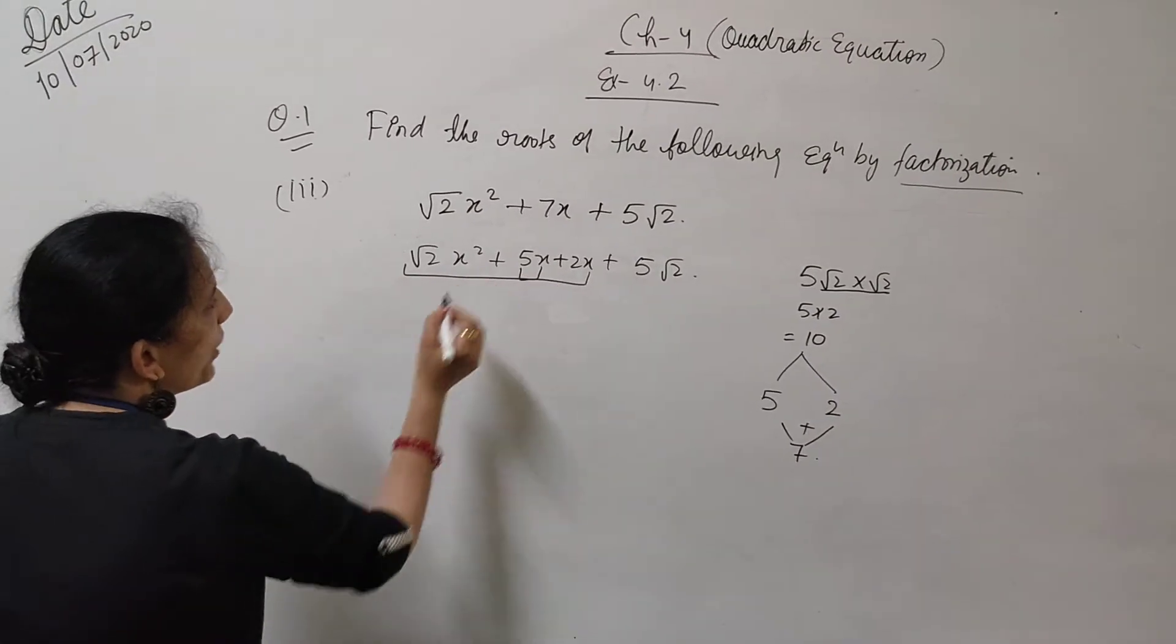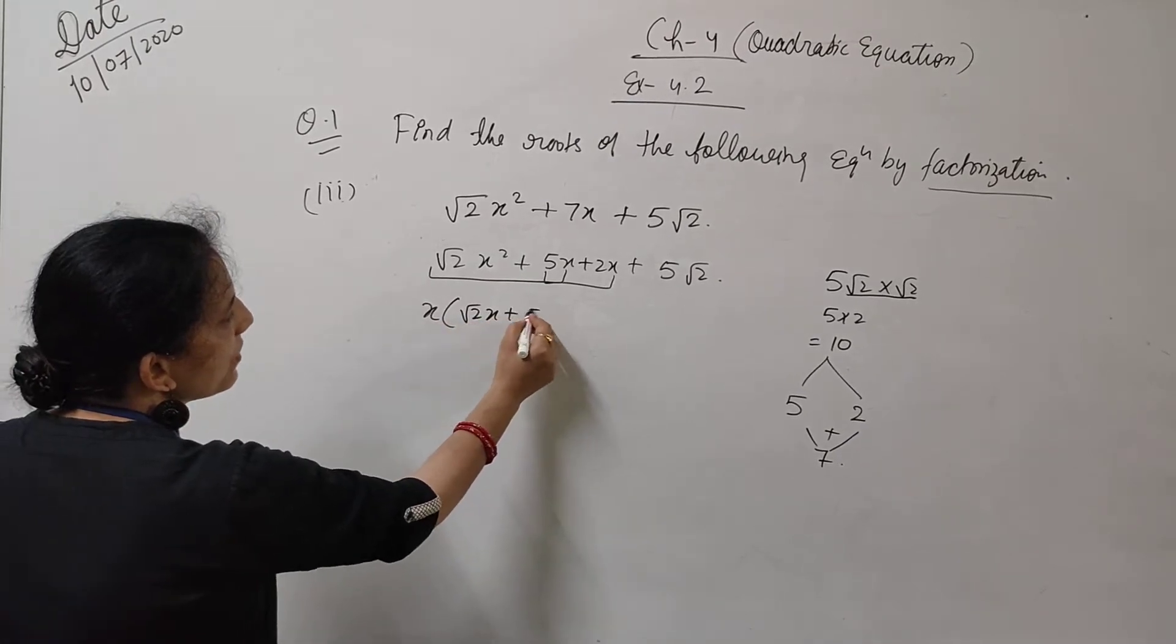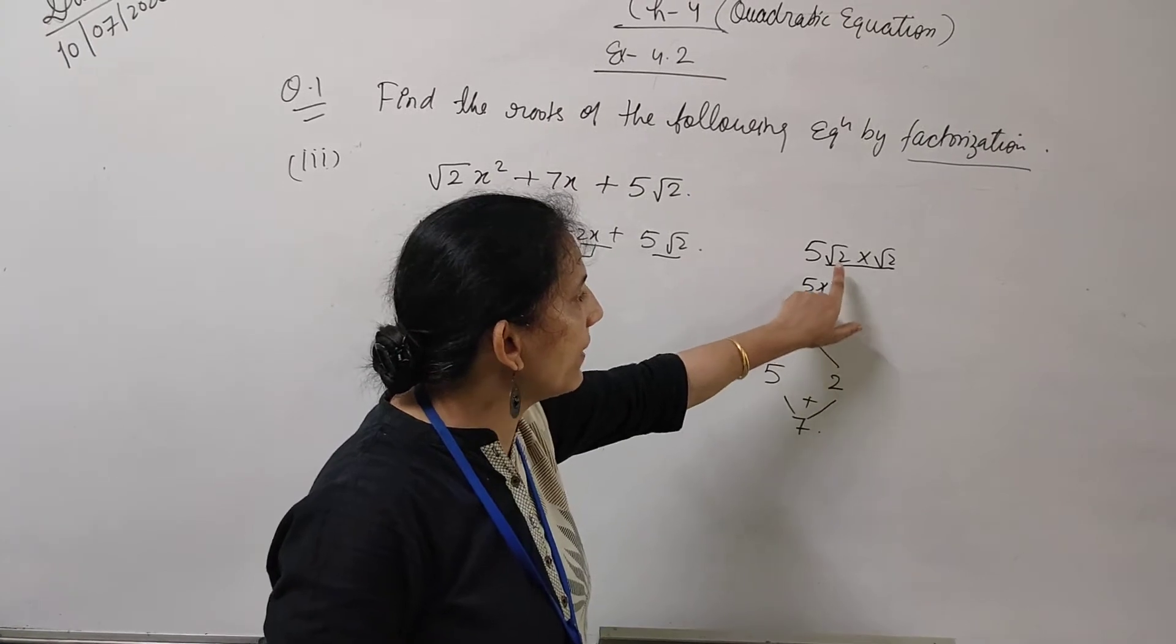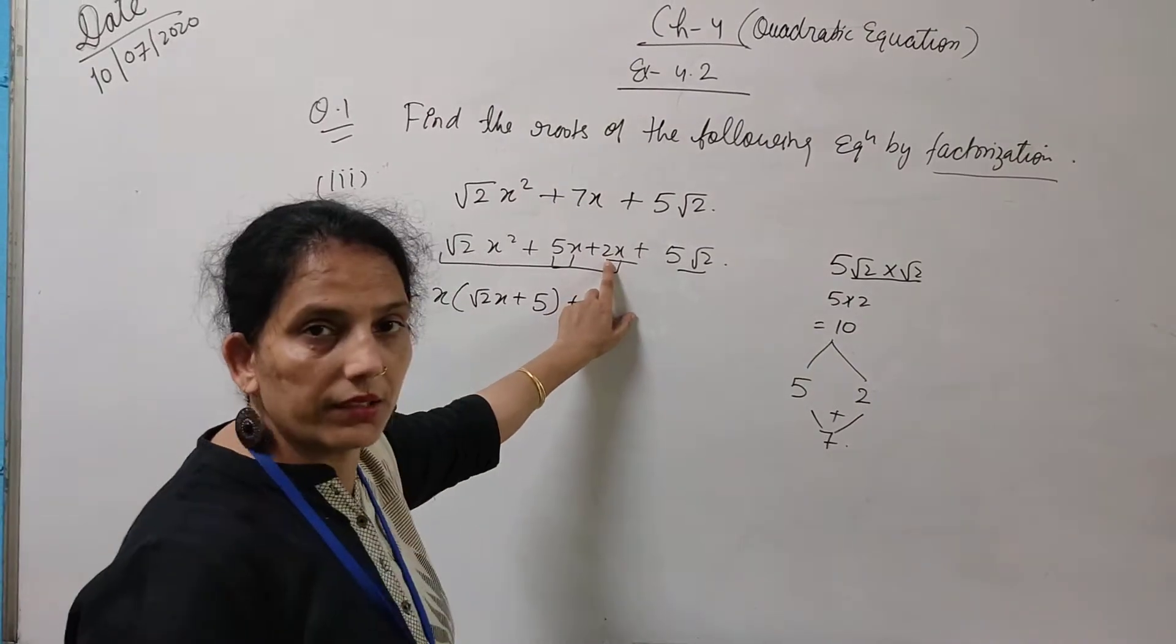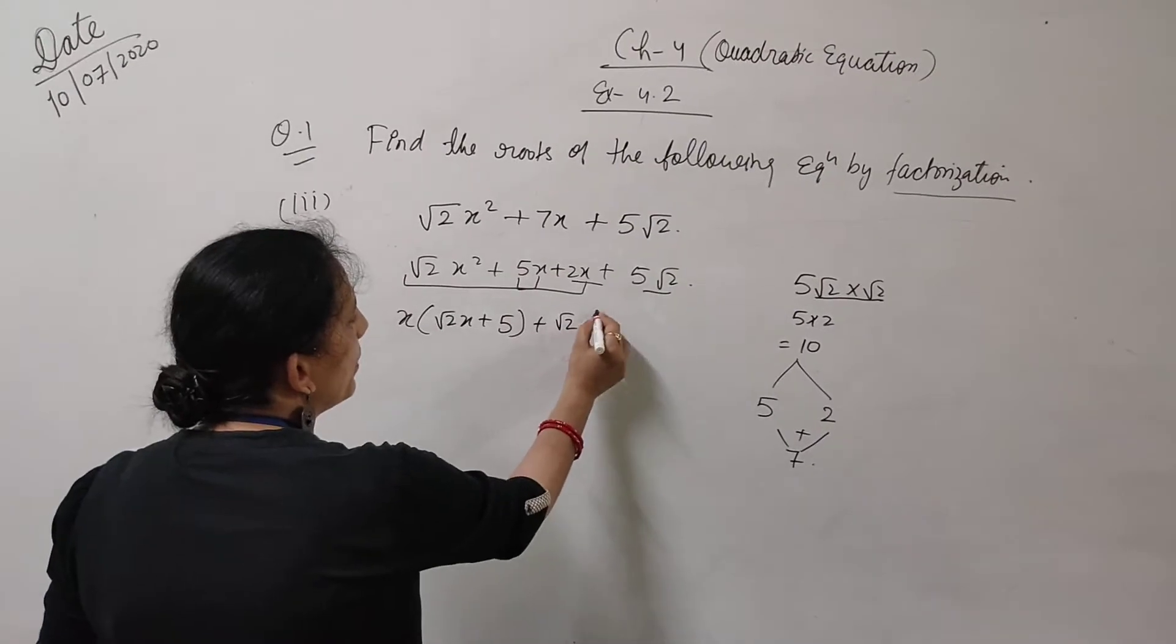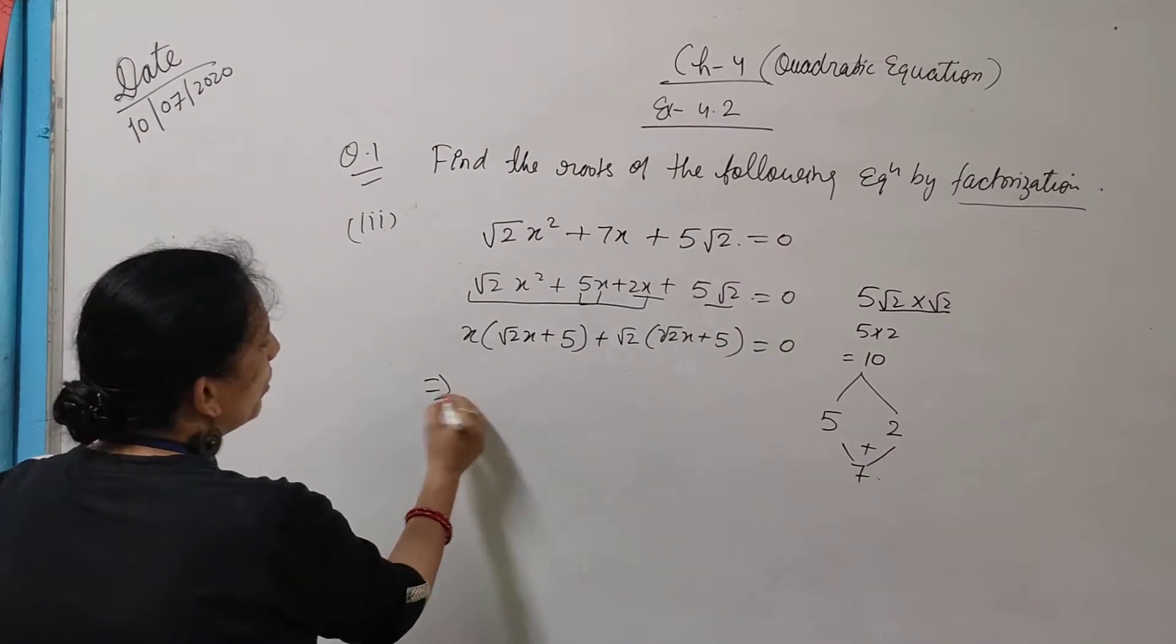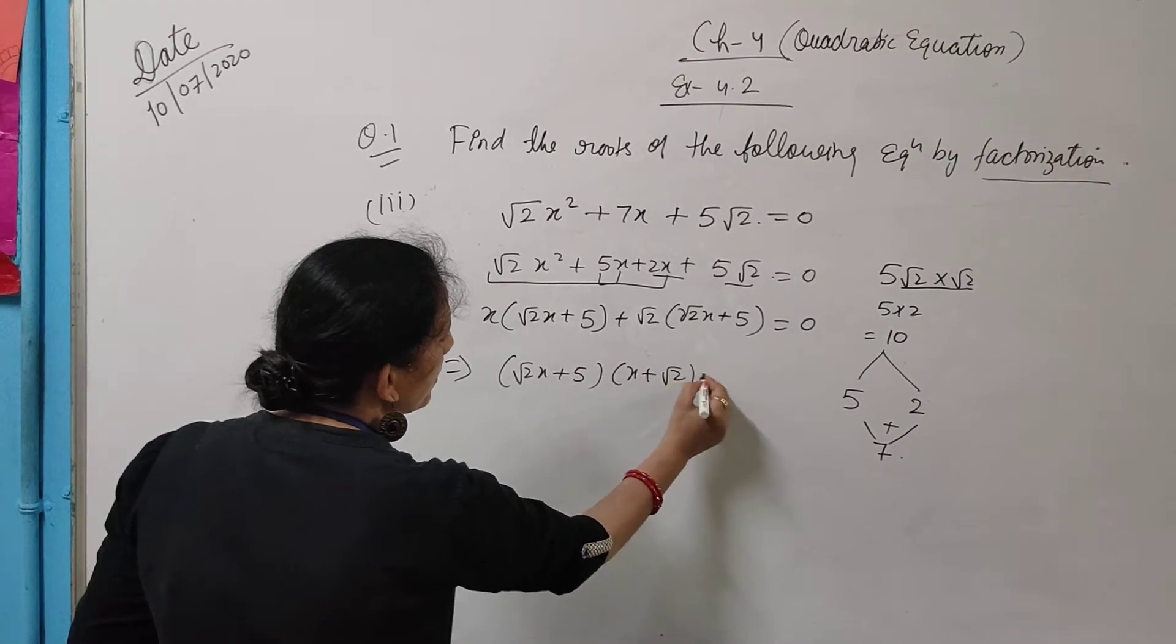From here we are going to take common x. Because nothing else is common, root 2 is not in 5. So here √2x plus 5. In these two terms, 2 is having factors √2 into √2. So here we can take √2 common. What is left? Another √2 is left. So √2 is common - √2x plus 5. Again, equal to 0 was there. So in both we take common x plus 5, or what is left? x plus √2 is equal to 0.